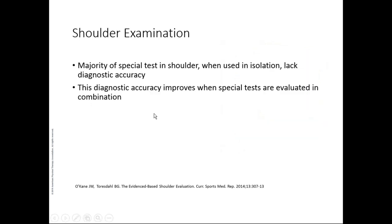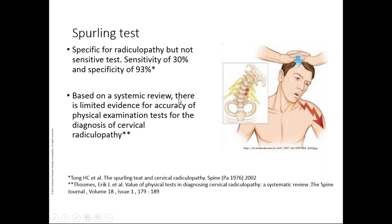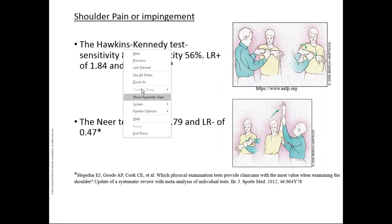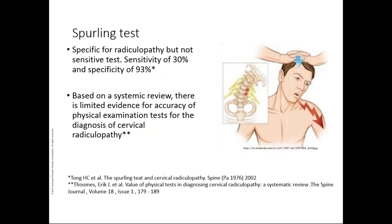Let's look at some special tests and their specificity and sensitivity. For neural causes, the Spurling test has a sensitivity of 30% and specificity of 93%. Based on a systematic review, there is limited evidence for accuracy of physical exam tests for the diagnosis of cervical radiculopathy, and a positive or negative Spurling test may not help you much.